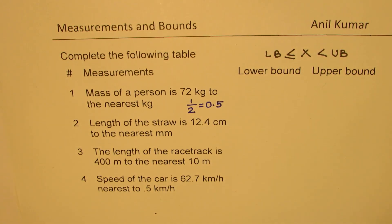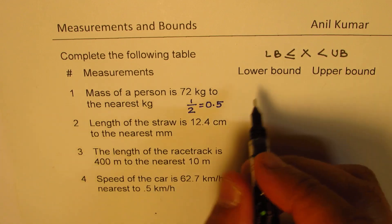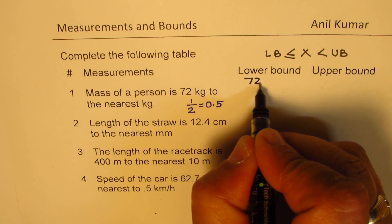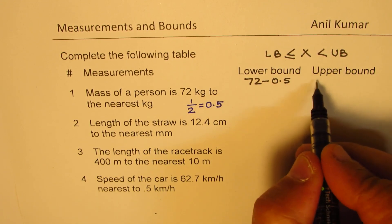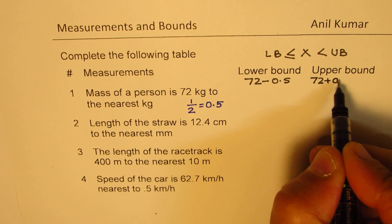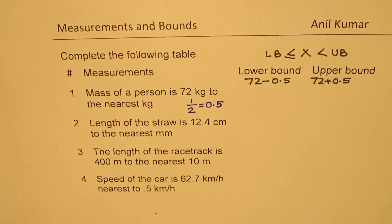So to get the lower bound, what do we do? From 72, we'll take away 0.5, and to get the upper bound, 72 plus 0.5. Does it make sense to you?